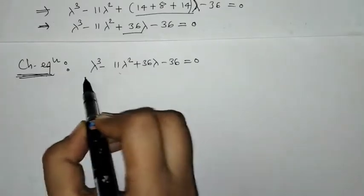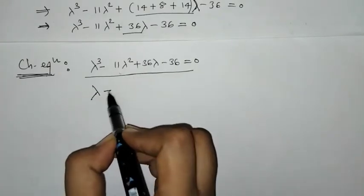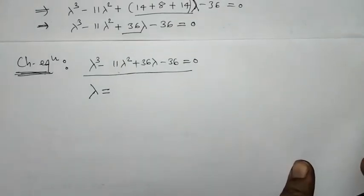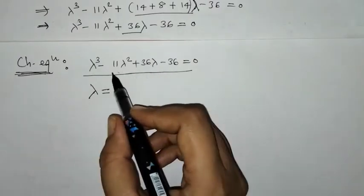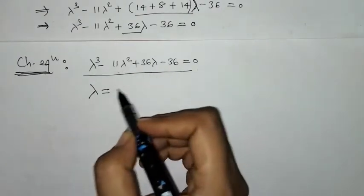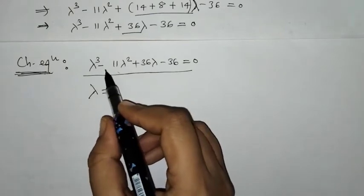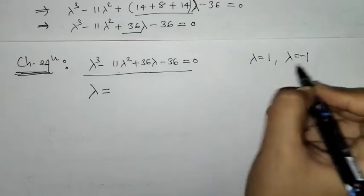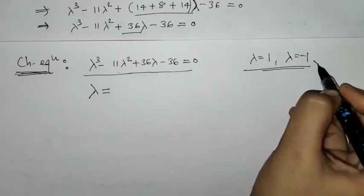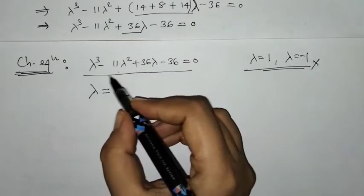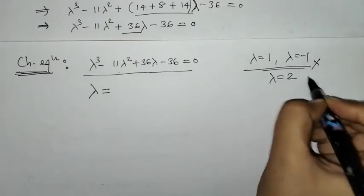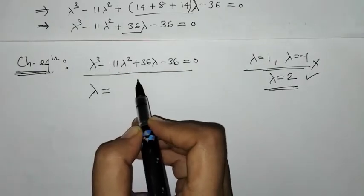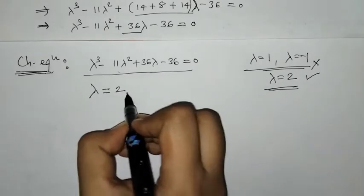We can check that this is a cubic equation, so we will get values of lambda — these are the characteristic values. By trial and error method we find the values of lambda. We check that lambda equals 1 and lambda equals minus 1 are not the roots of this equation. The first root is lambda equals 2; when we put lambda equals 2, this equation gets satisfied.